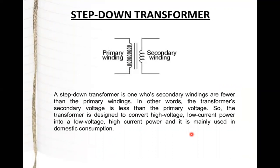There are two types of transformers: step-down and step-up. The symbol shows a primary winding and a secondary winding with two equal parallel lines. A step-down transformer is one whose secondary windings are fewer than the primary windings — the secondary voltage is less than the primary voltage. It is designed to convert high voltage, low current power into low voltage, high current power, and is mainly used in domestic applications.